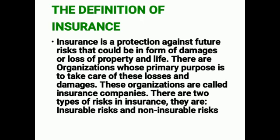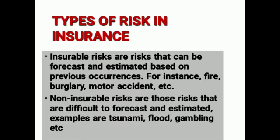Insurable risks are risks that can be forecast and estimated based on previous occurrences — for instance, fire accidents, motor accidents, and burglary. This kind of risk can happen at any given time. For example, a person insures his vehicle with an insurance company, and then that vehicle is involved in an accident. The insurance company takes care of repairing the vehicle, or replacing it if it was totally damaged.